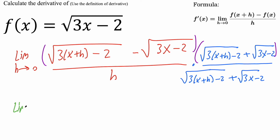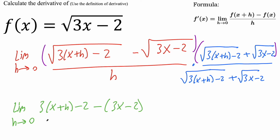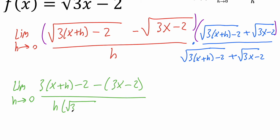Now we're going to clean it up. We have the limit as h approaches zero. We take this piece and multiply by this piece, so we get rid of the square root — we have three(x plus h) minus two. Then we take the negative piece and multiply by its opposite, so they cancel out. The last multiplication gives us minus (three x minus two). The whole thing is divided by h times the square root of three(x plus h) minus two, plus the square root of three x minus two.